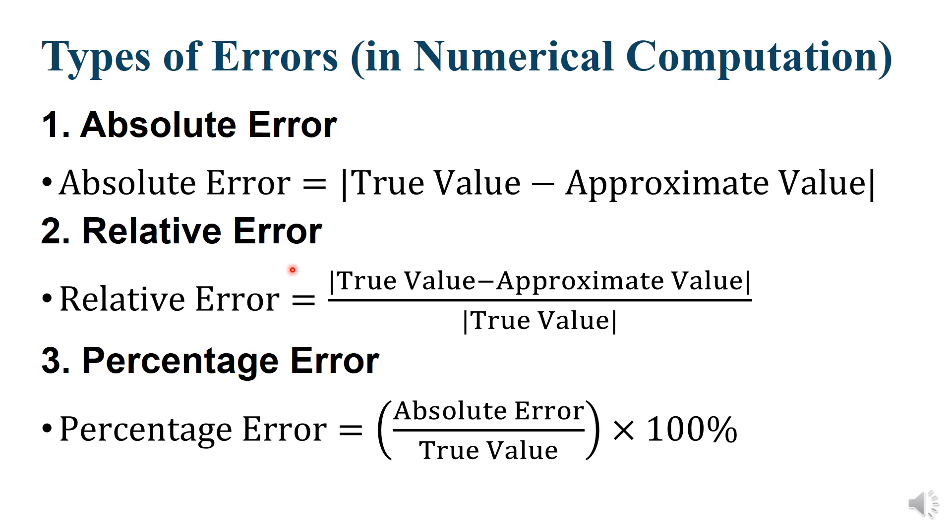Second point, Relative Error. Relative Error equals Absolute value of True value minus approximate value, divided by True value. If error is given minus sign, then this sign will be converted to positive sign.